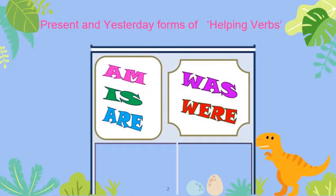Now students, we have learned the usage of 'is', 'are', and 'am' in the first term. Now we are going to learn the usage of 'was' and 'were'. As we learned, when we talk about present time, we use 'is', 'are', and 'am'. But when we talk about past days, previous days, or yesterday, we use 'was' and 'were' in the sentences.